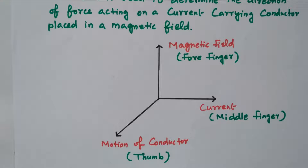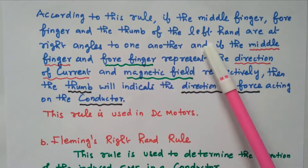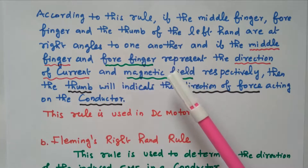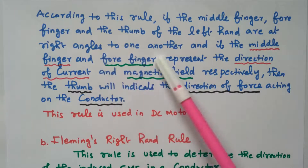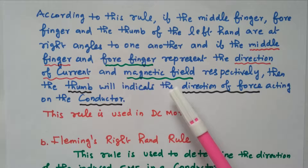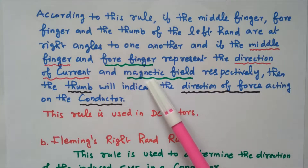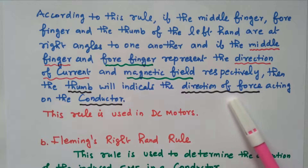According to Fleming's left-hand rule, if the middle finger, forefinger, and thumb of the left hand are at right angles to one another, the middle finger represents the direction of current and the forefinger represents the direction of the magnetic field. The thumb then indicates the direction of force acting on the conductor.